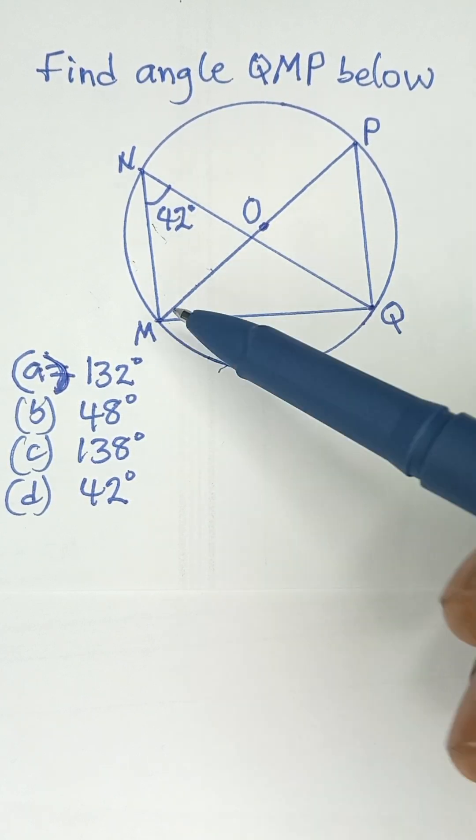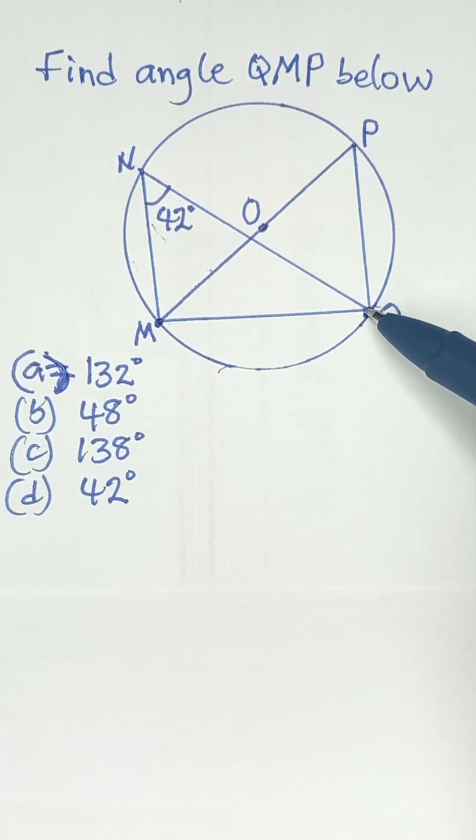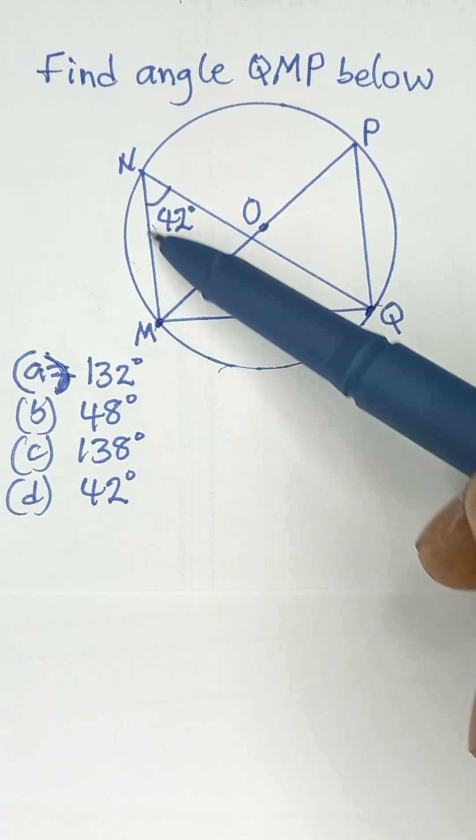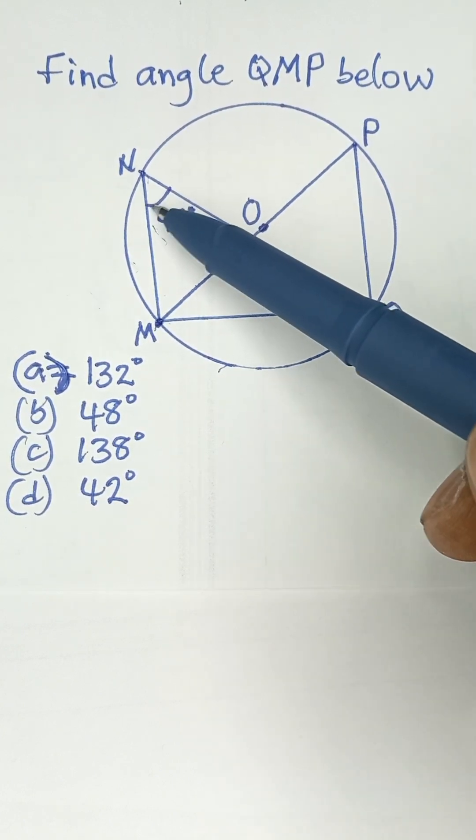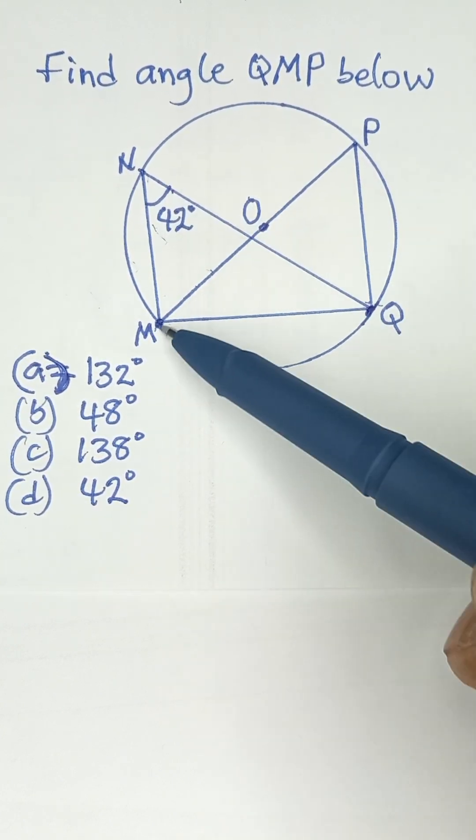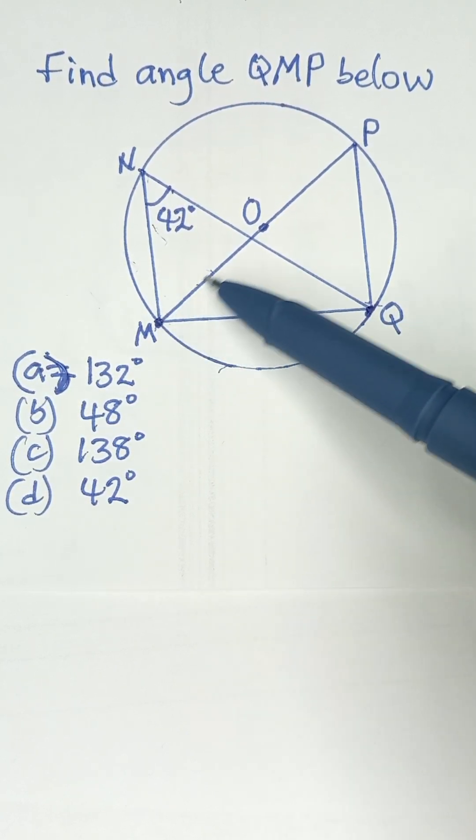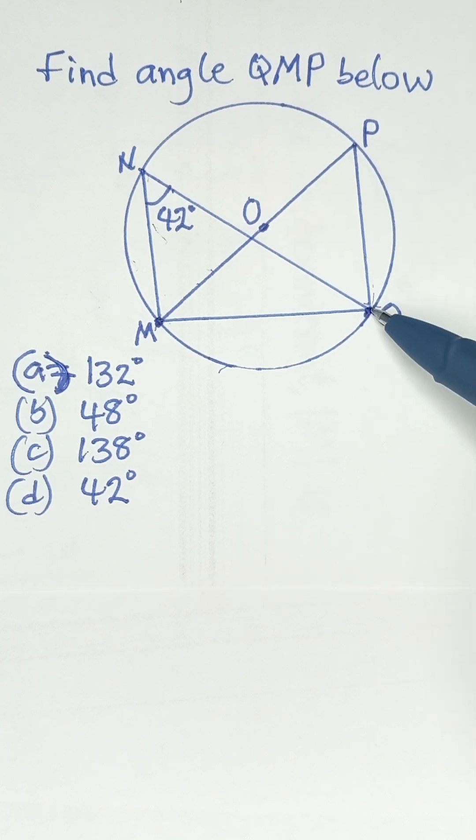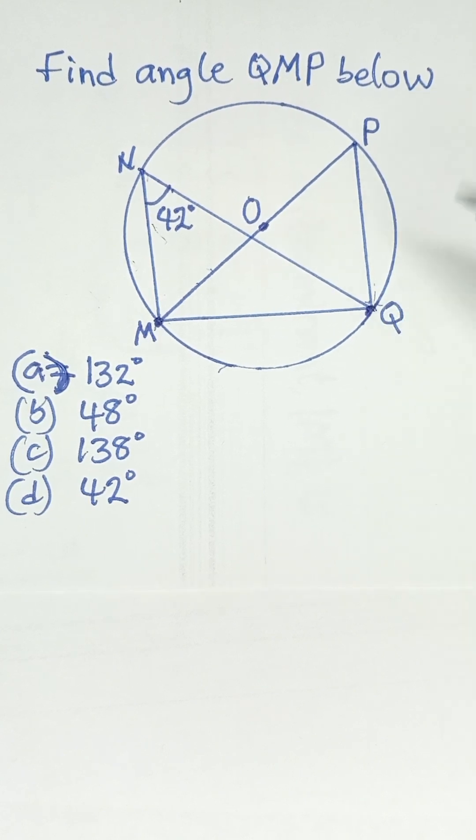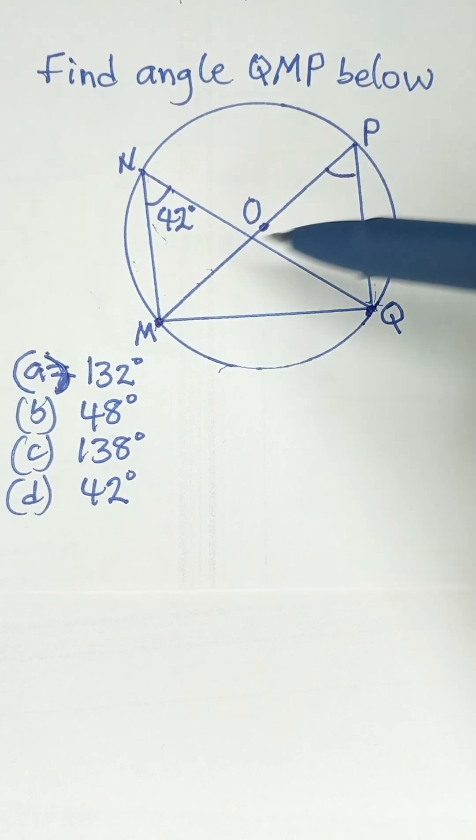Now, if you look at this triangle with M and Q as reference points, we have an angle going to the circumference at N to form 42 degrees. With the same M and Q as reference points, we have another two set of lines going to point P to form another angle. So because of that, we say the two angles are equal.